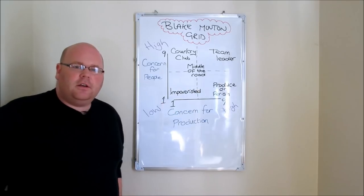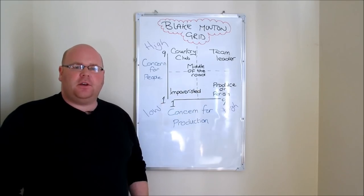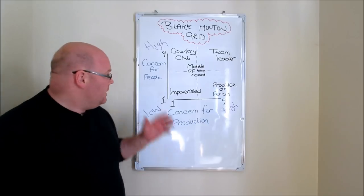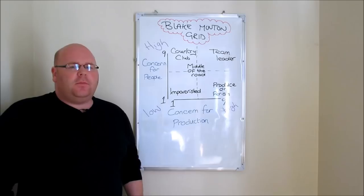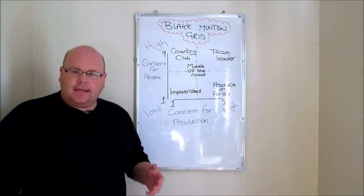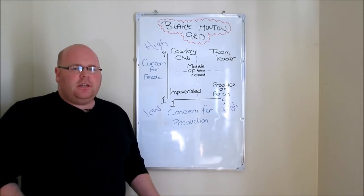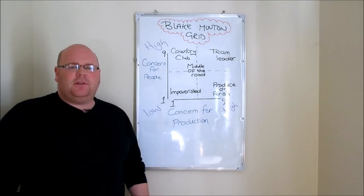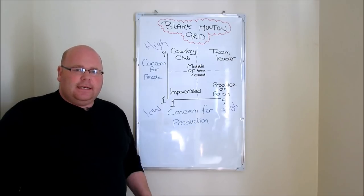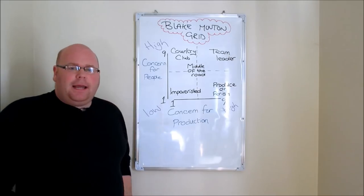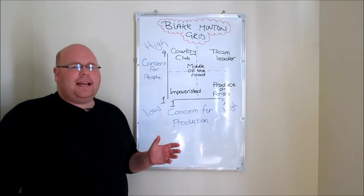In this tutorial we're going to look at another one of our leadership topics. This time we're going to take a look at something known as the Blake Mouton Grid, which we have over here on the board. I've already looked at topics like McGregor's Theory X Theory Y and the Tannenbaum and Schmidt continuum, trying to explain some different theories behind how managers may approach the jobs that they do. Today we've got the Blake Mouton Grid.